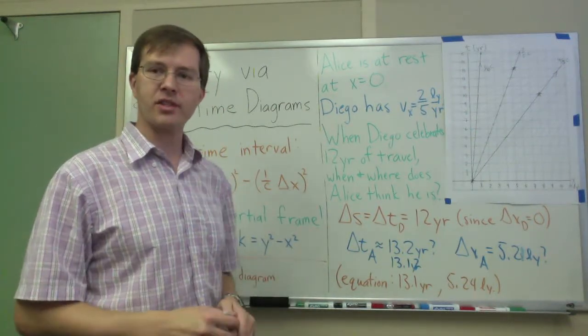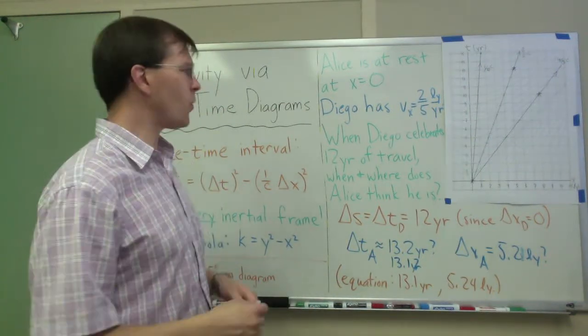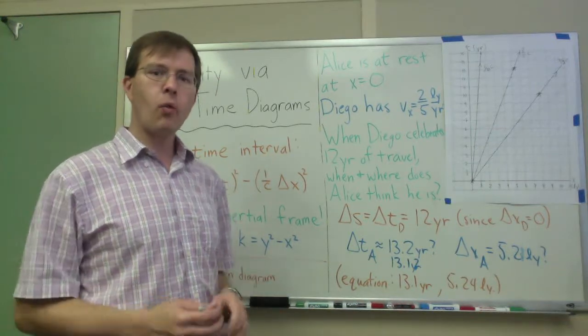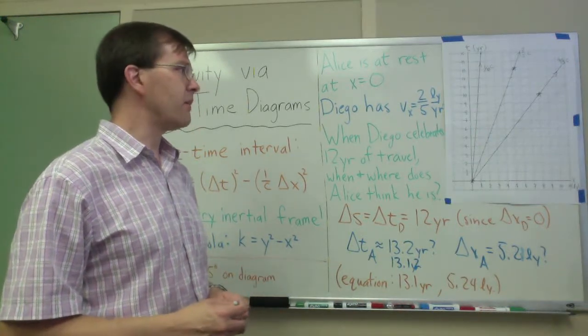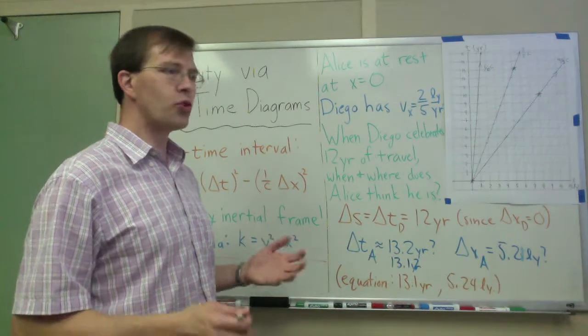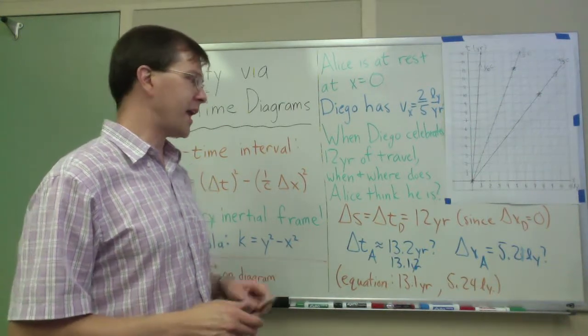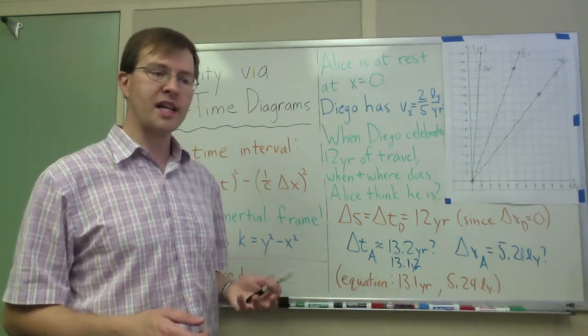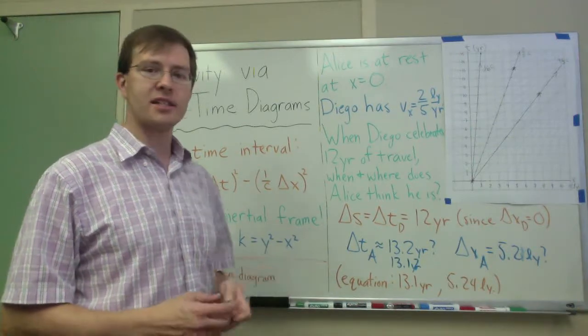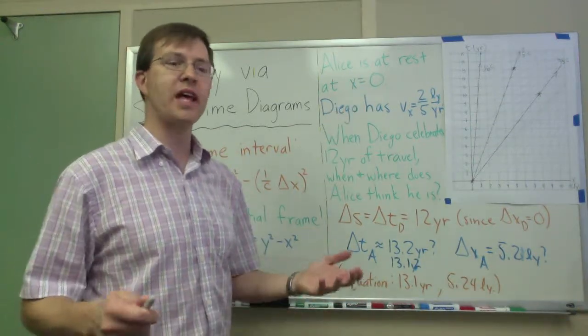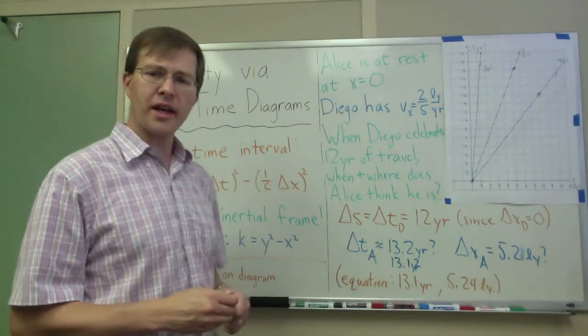And while I'm at it, let me throw out one more just fun little tidbit here. Imagine that two-thirds of the way there, at the eight-year point, Diego wanted to send a message back to Alice saying, having a great trip, I'm almost there. What would that look like in this graph?